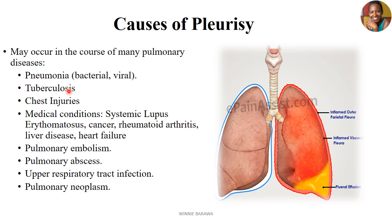In the presence of these other diseases we can end up with pleuritis. The diseases include pneumonia, tuberculosis, chest injuries, and medical conditions such as systemic lupus erythematosus, cancer, rheumatoid arthritis, liver disease, and heart failure. It can also occur with pulmonary embolism, pulmonary abscess, upper respiratory tract infections, and pulmonary neoplasms.